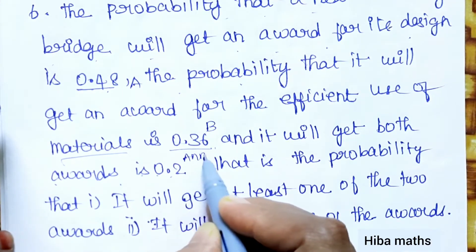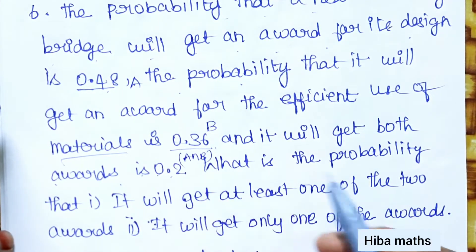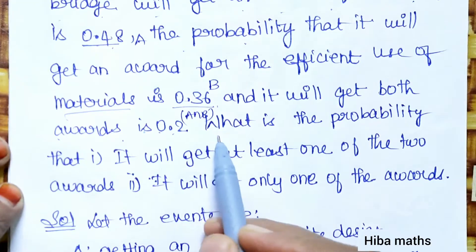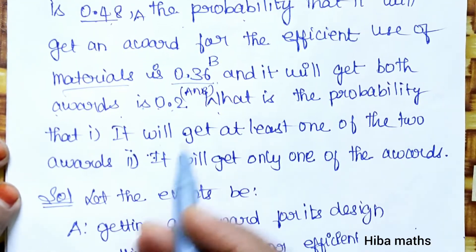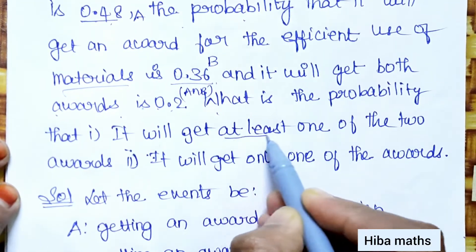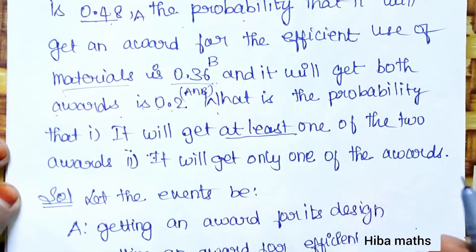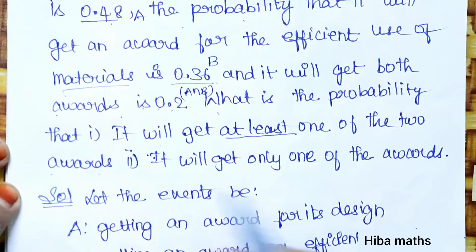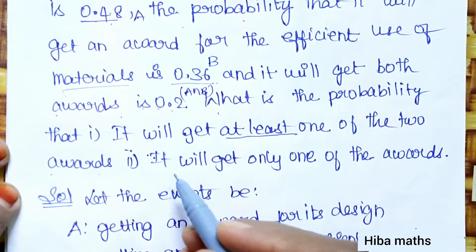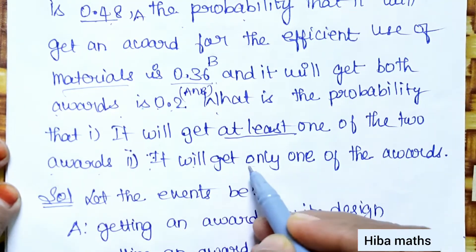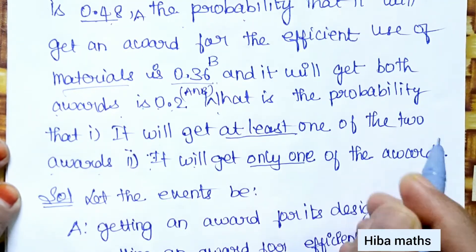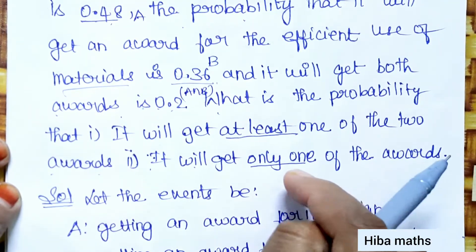What is the probability that it will get at least one of the two awards? Second, what is the probability that it will get only one of the awards?